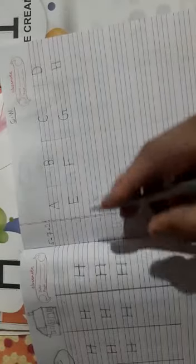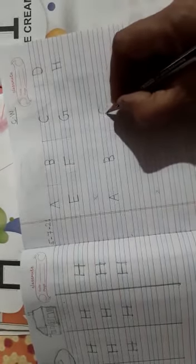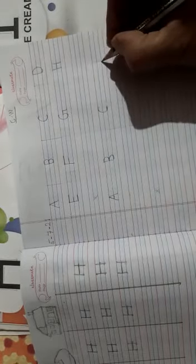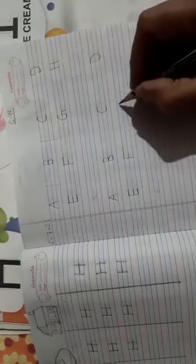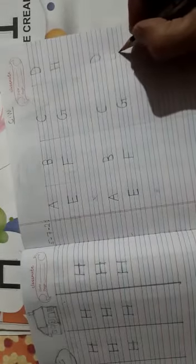After that you will leave one line, meaning skip one line, then again: A, B, C, D, E, F, G, H. This way you will write, or complete the full page, okay.